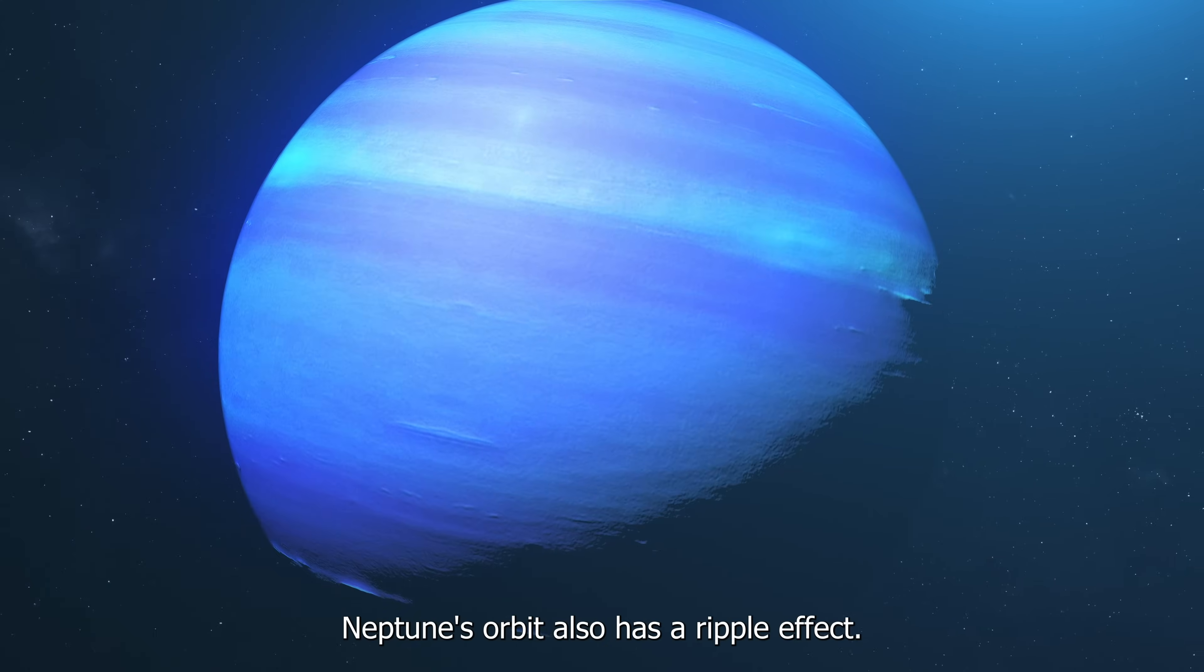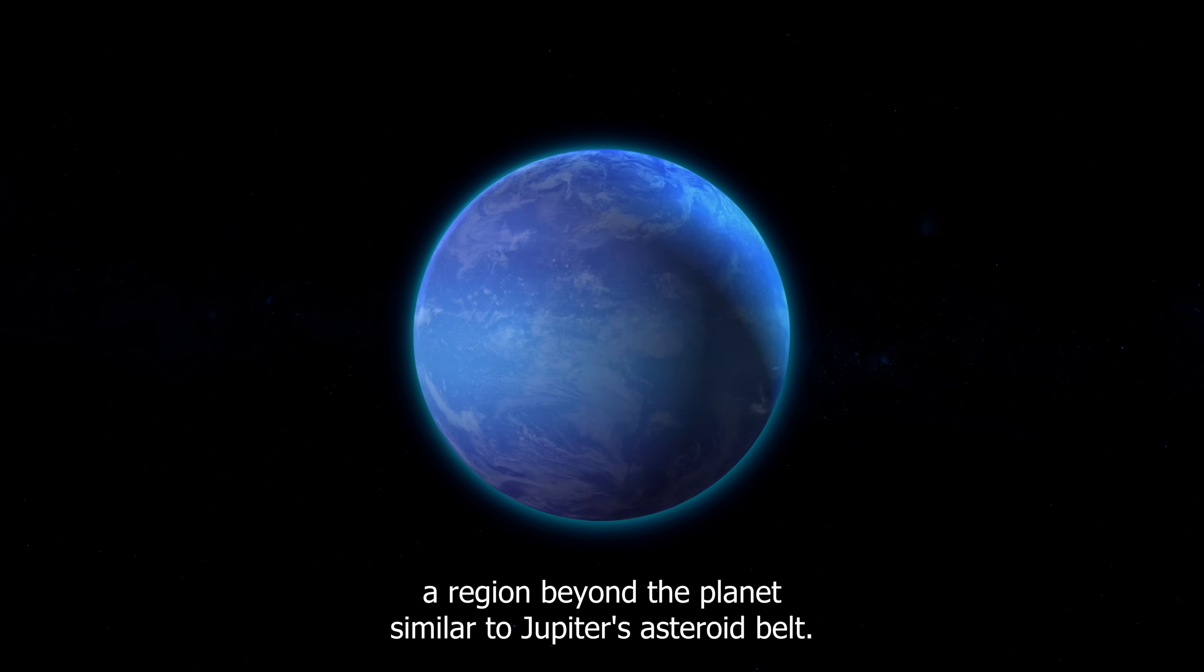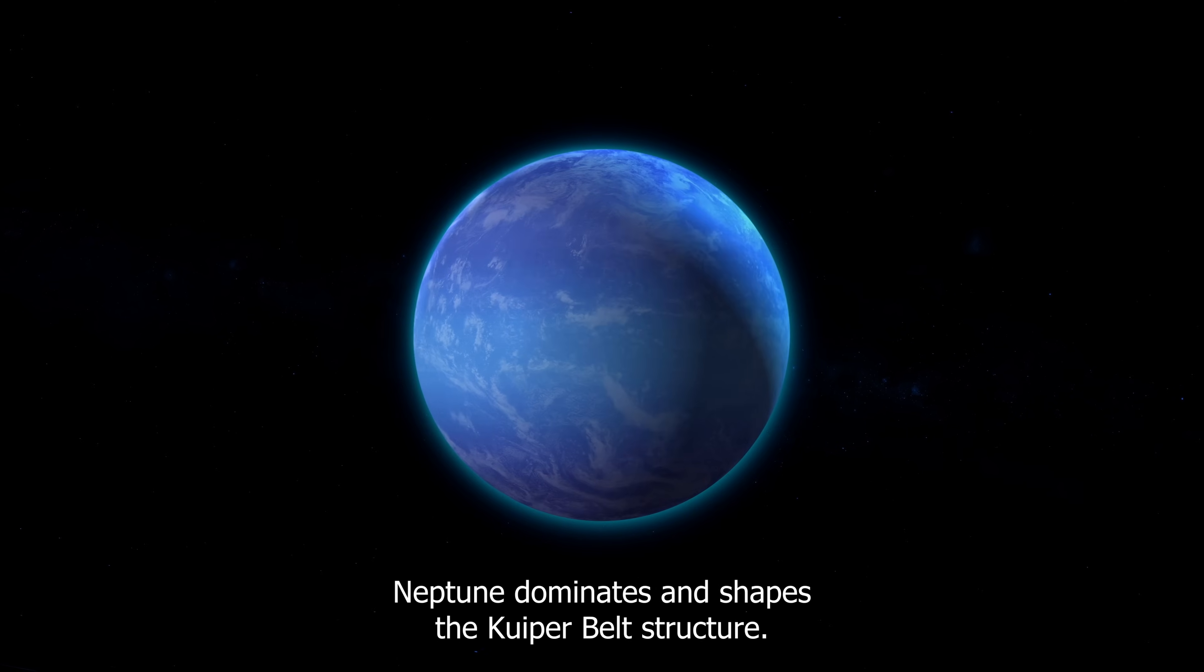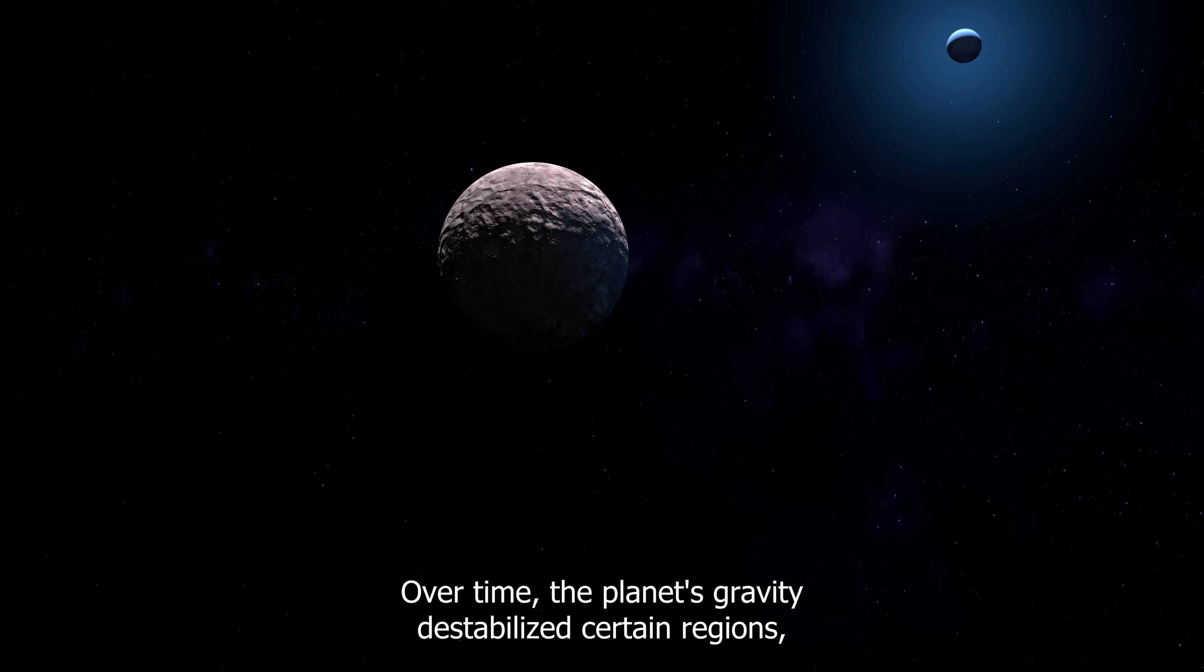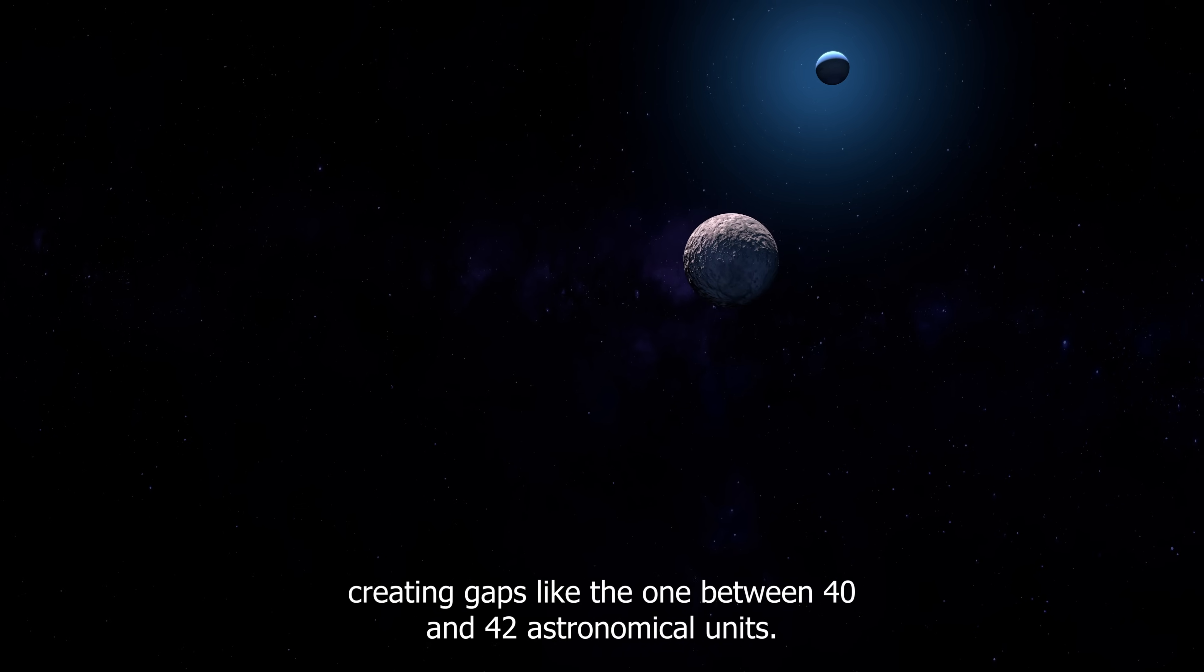Neptune's orbit also has a ripple effect. Astronomers discovered that Neptune's influence extends to the Kuiper belt, a region beyond the planet, similar to Jupiter's asteroid belt, but larger. Telescopic observations show that Neptune dominates and shapes the Kuiper belt structure. Over time, the planet's gravity destabilized certain regions, creating gaps like the one between 40 and 42 astronomical units.